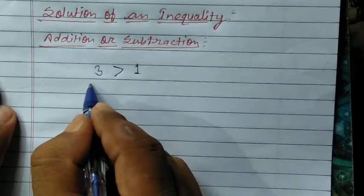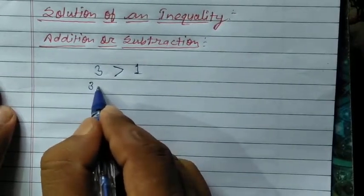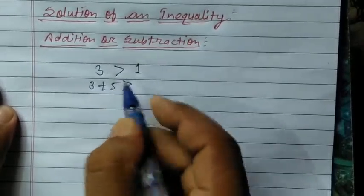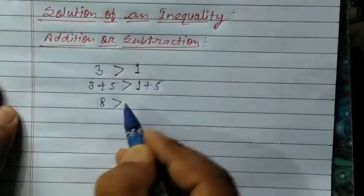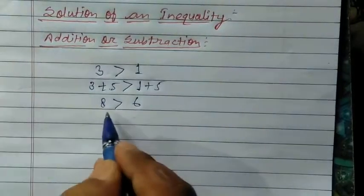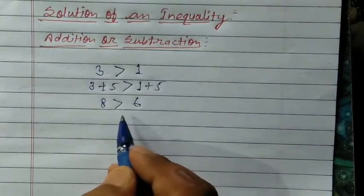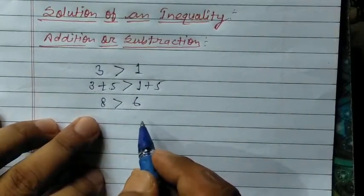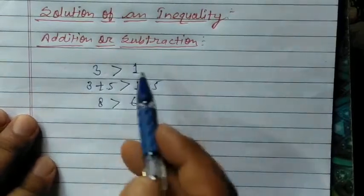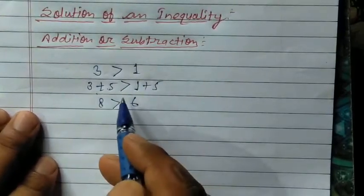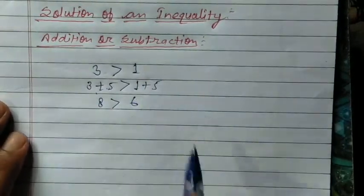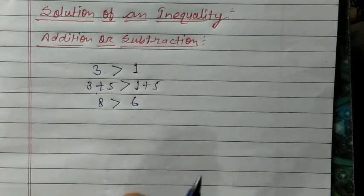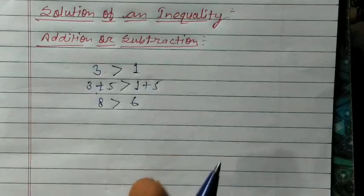Suppose if we add 5 on both sides — 3 + 5 = 8 is greater than 1 + 5 = 6. So here again 8 is greater than 6, so the inequality does not change. Same case for subtraction — if we add or subtract any same number on both sides, there is no effect, meaning the inequality does not change. So in addition and subtraction, we can add and subtract the same number on both sides and the inequality will not change.